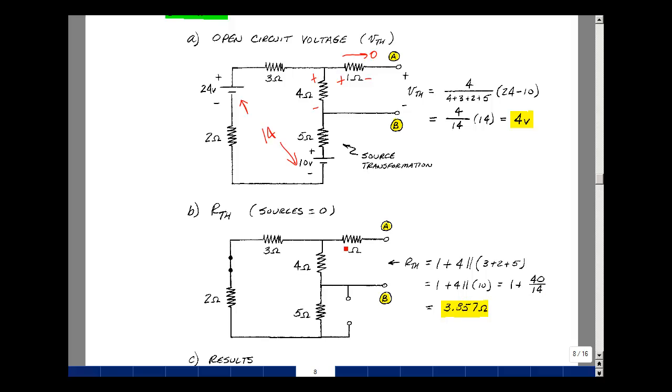And then we're going to add to that the 1 ohm. In other words, when you have one resistance here between these two terminals, we're going to add that in series with the 1 ohm. That's 3.857.